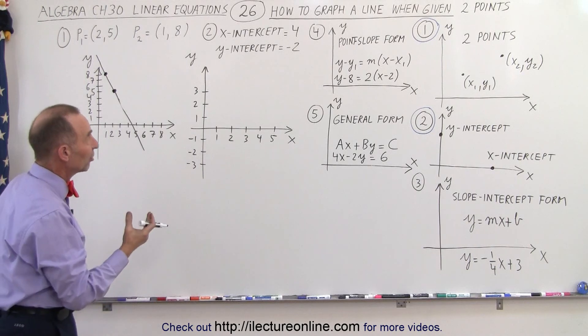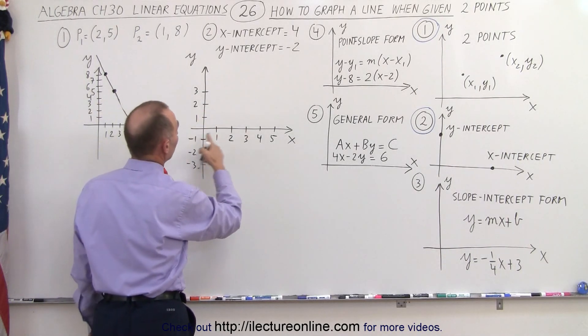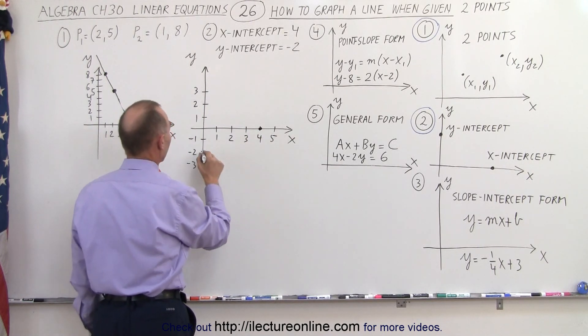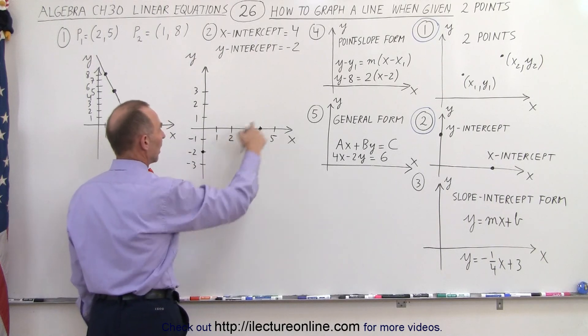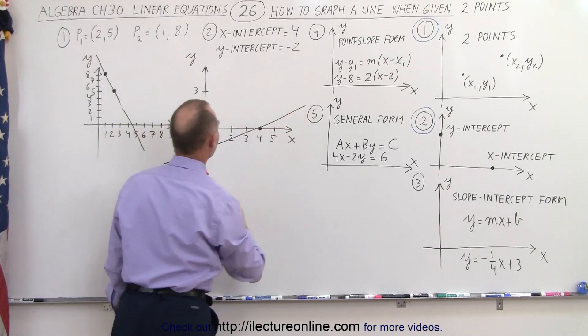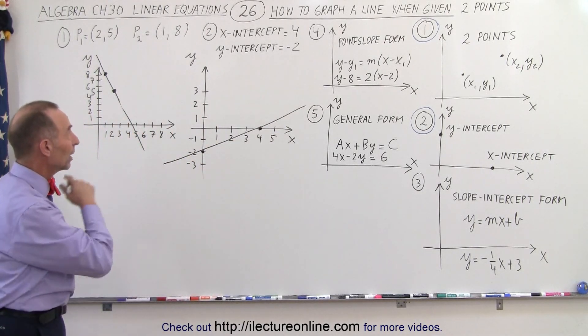Now, the x and y-intercept, we do the same thing. The x-intercept means where it crosses the x-axis at x equals 4, and the y-intercept is where it crosses the y-axis at y equals negative 2. Again, we end up with two points, we connect those two points, like so, and now we have the graph that's represented by those two intercepts.